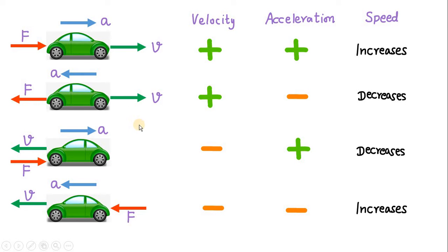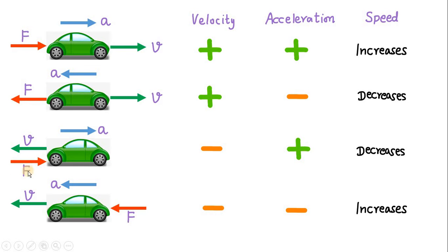Now, it is very easy to see that when the force is pushing the car in the same direction as its motion, then definitely the speed must increase. And when the force is acting opposite to the direction of motion, then this force is opposing the motion and will cause a reduction in speed. Therefore, speed will decrease. Now, in the third and fourth figures we see some new amazing things. In the third figure, the force is acting in the positive direction, so acceleration is also acting in the positive direction — acceleration is positive, but the velocity is negative. So the force is actually acting opposite to the direction of motion, opposing the motion of this car. Therefore, the speed will decrease.